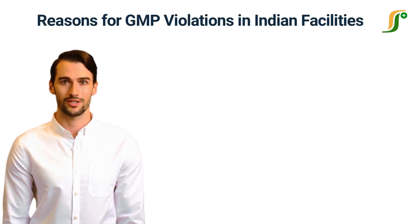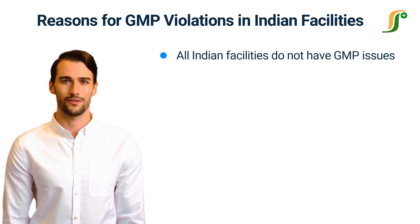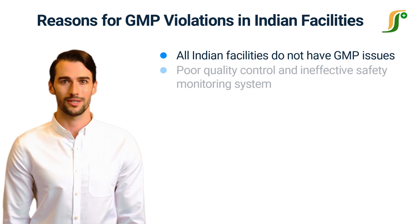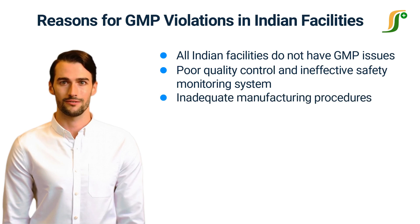Let us know the reasons for GMP violations in Indian facilities. It does not mean that all Indian facilities have GMP issues; we are talking only about the facilities having issues. India has 10,000-plus pharmaceutical manufacturing facilities, and GMP violation issues are found in less than 1% of facilities. Poor quality control and ineffective safety monitoring systems are the main reasons. Sometimes inadequate manufacturing procedures are followed, the manufacturing process is deviated, or some parts of the process are skipped, resulting in low-quality products.